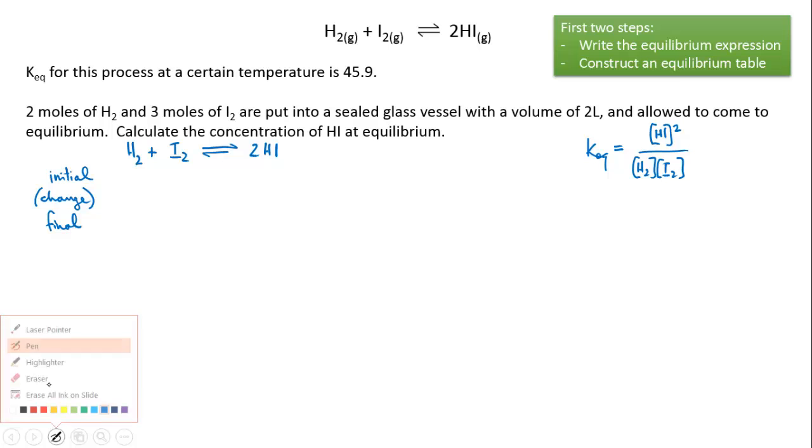We know the volume is 2 liters and we have 2 moles of hydrogen in 2 liters, so the concentration of hydrogen is 2 over 2 which equals 1 mole per liter. We've got 3 moles of iodine in 2 liters, so it's 3 divided by 2 which is 1.5 moles per liter. We have no hydrogen iodide to start off with.